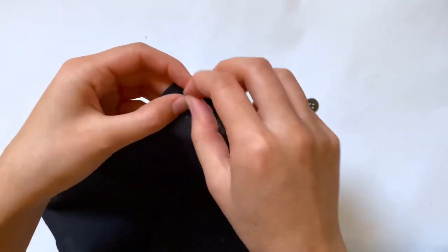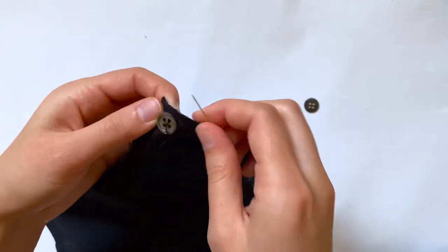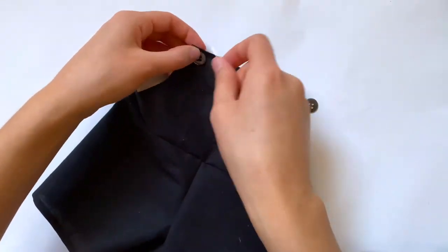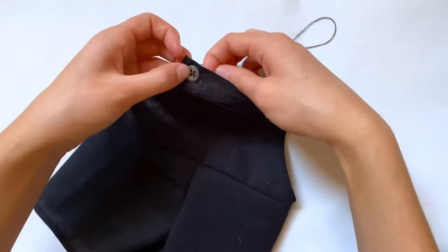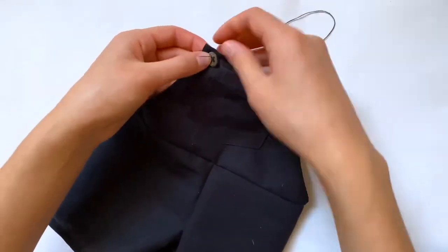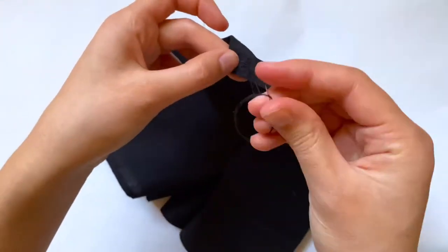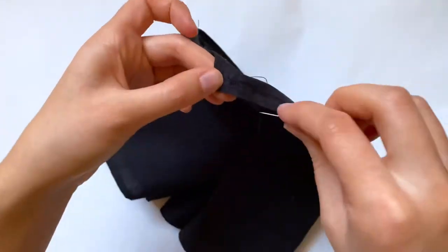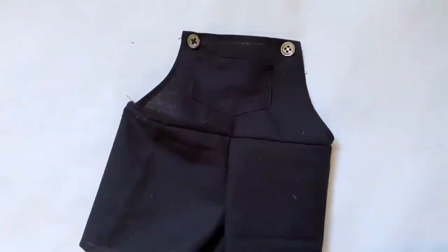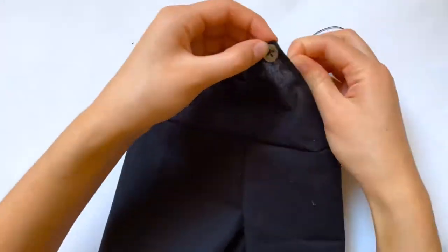Then I'm going to repeat that for the other one to create this X shape. I'm going to repeat that a few times to make sure this button is secure. After repeating that X shape a few times I'm just going to lock my stitch right in the back and now I just need to do the same thing to the other button.